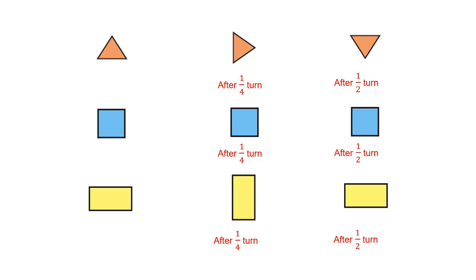That is, a triangle does not look the same after one-fourth turn and after half turn. In the case of a rectangle, it does not look the same after one-fourth turn, but it looks the same after half turn.